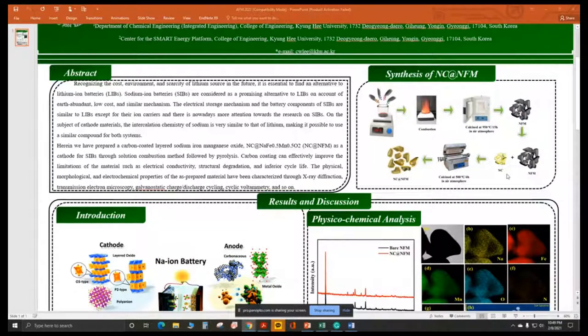To coat nitrogen carbon, we used a solid state method where we added NC and NFM together in a pestle and mortar and ground for about 45 minutes, then calcined at 500 degrees Celsius for 4 hours in atmosphere. Finally, we achieved nitrogen carbon coated NFM.